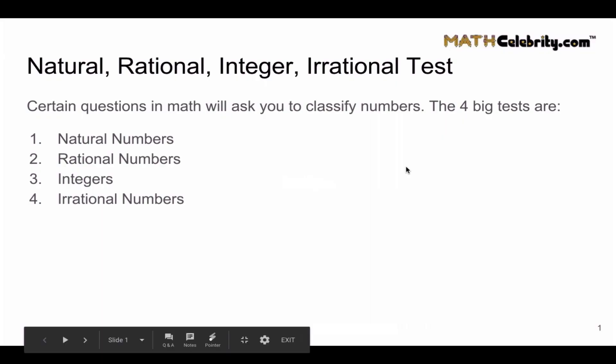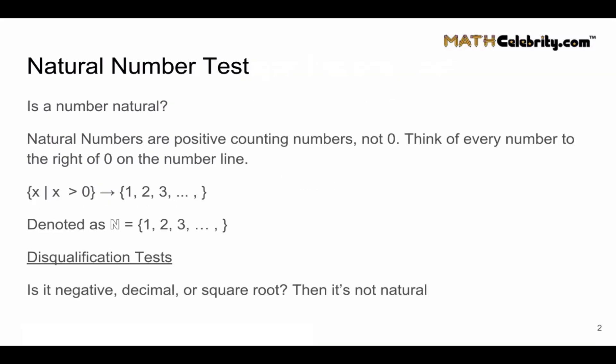We've got the four types of numbers: natural, rational, integers, and irrational. Let's start with the natural number test. So let's say you're given some number n and we want to know, is this number natural? First, it helps to know the properties of natural numbers.